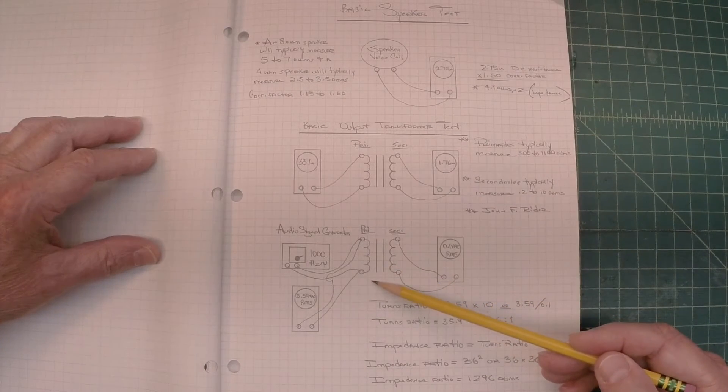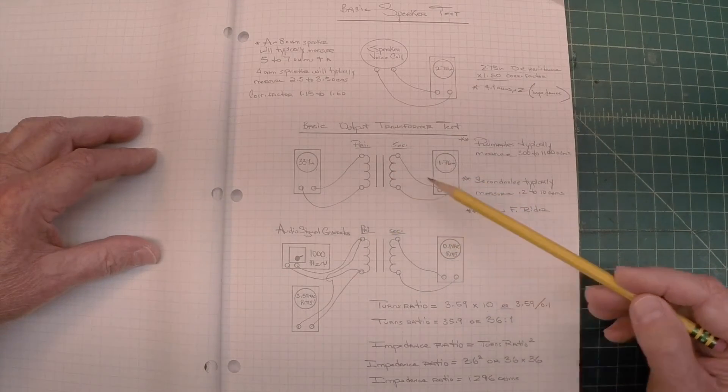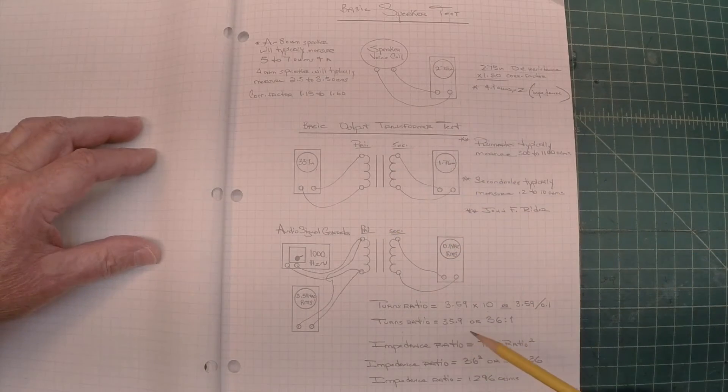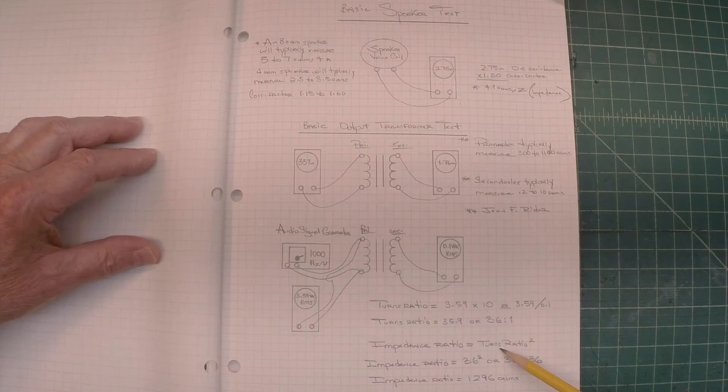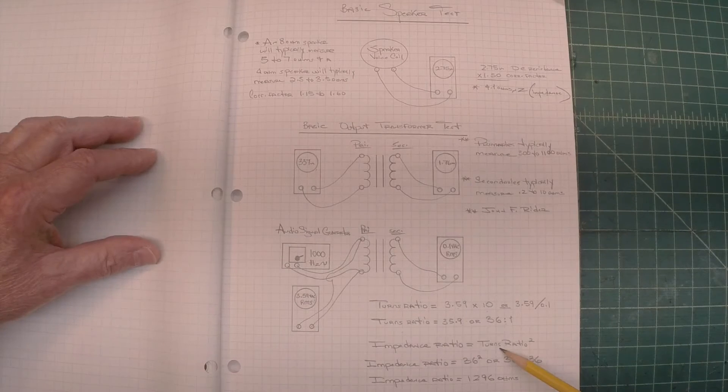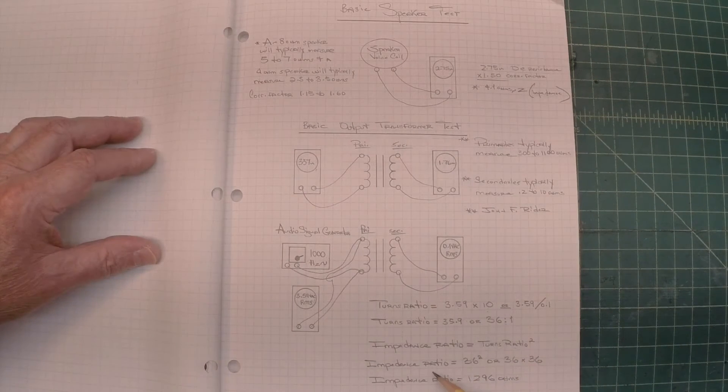So the output transformer itself, we already tested DC resistance just to make sure it's not open. And then to get the impedance ratio, all I need to do is take the turns ratio and square that number, or multiply it by itself.